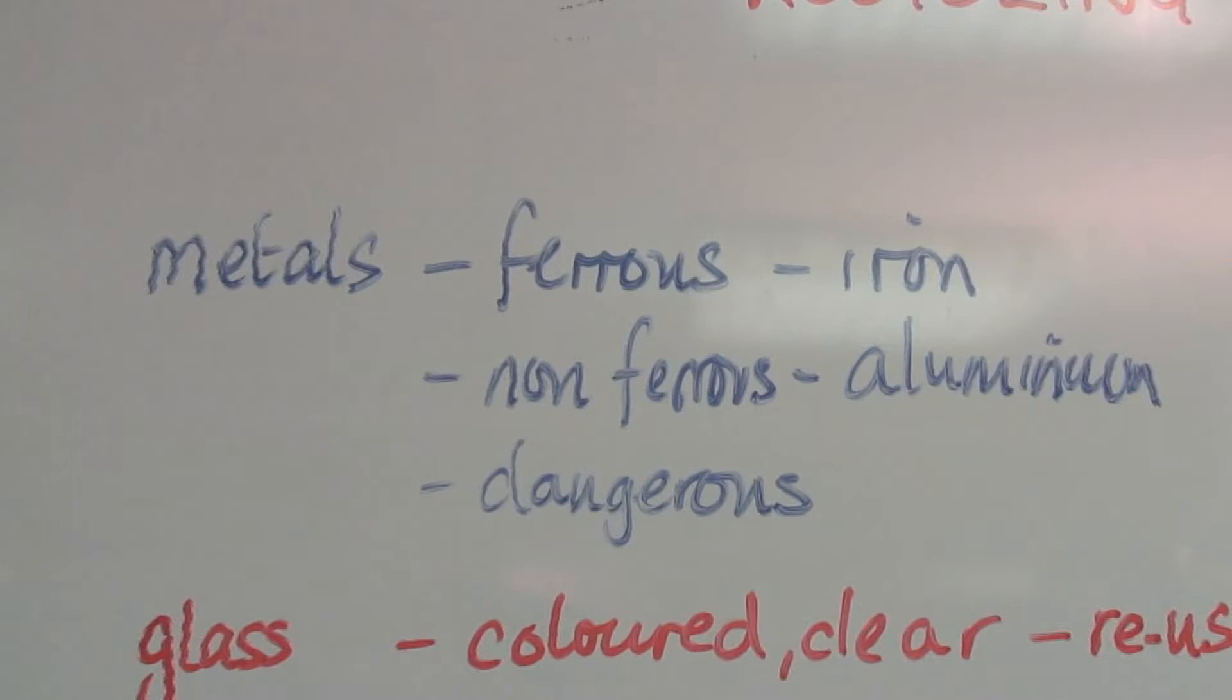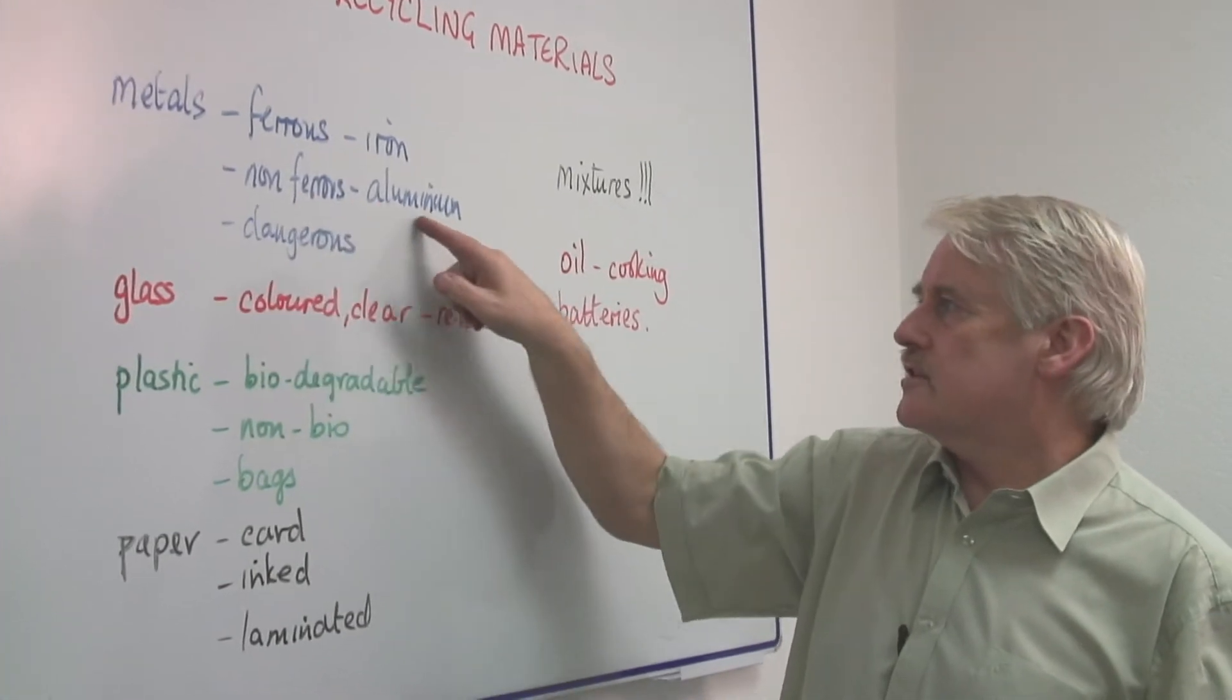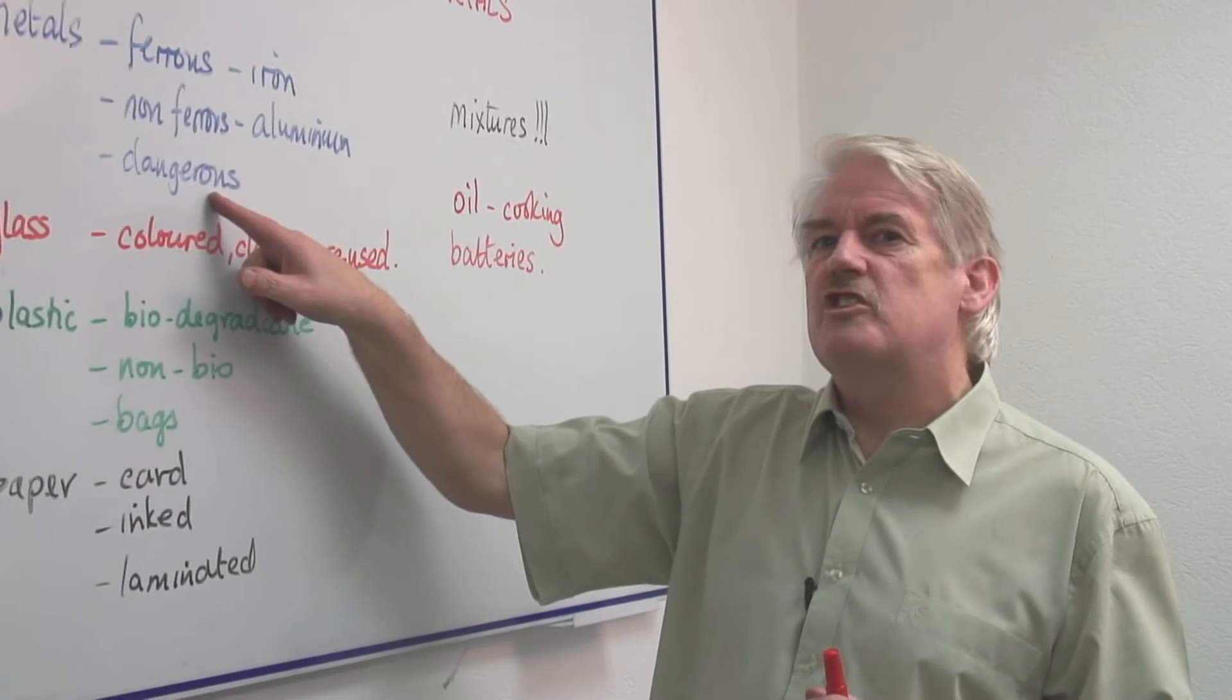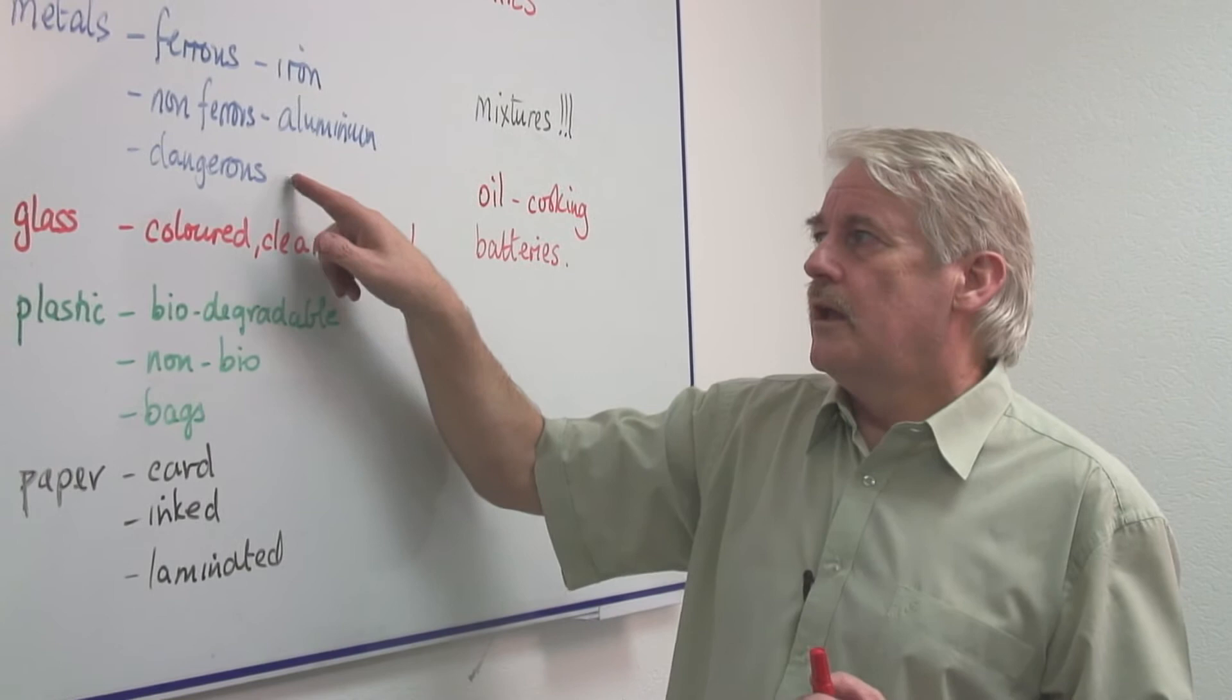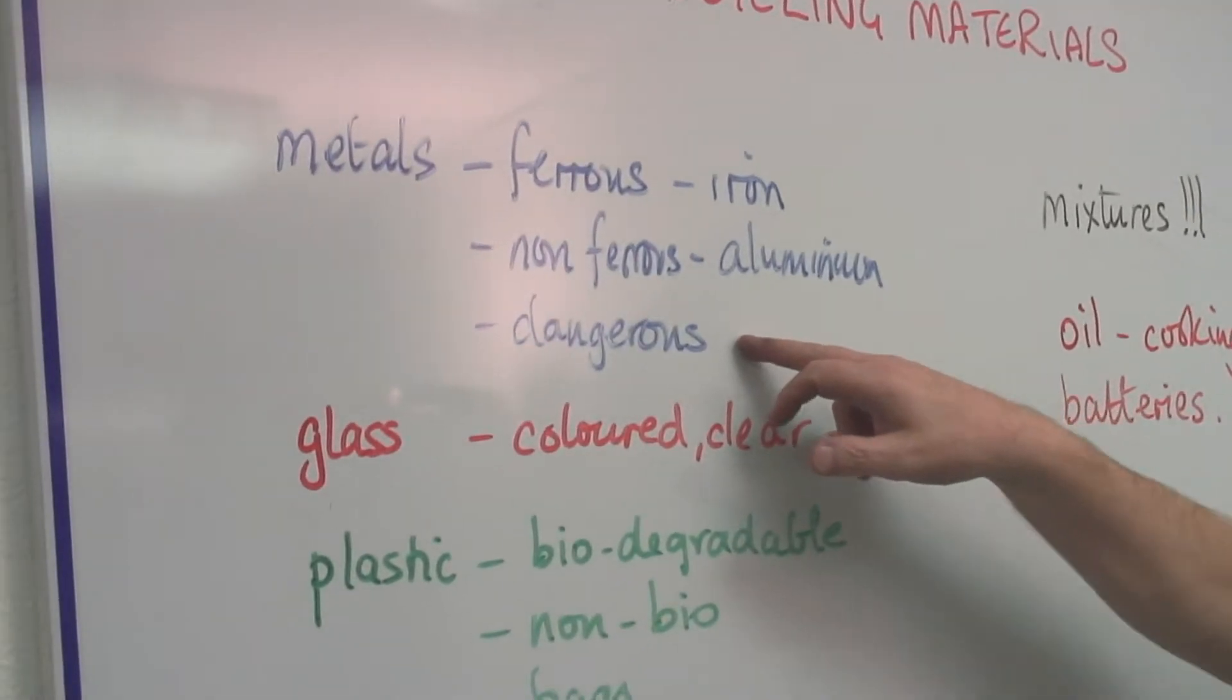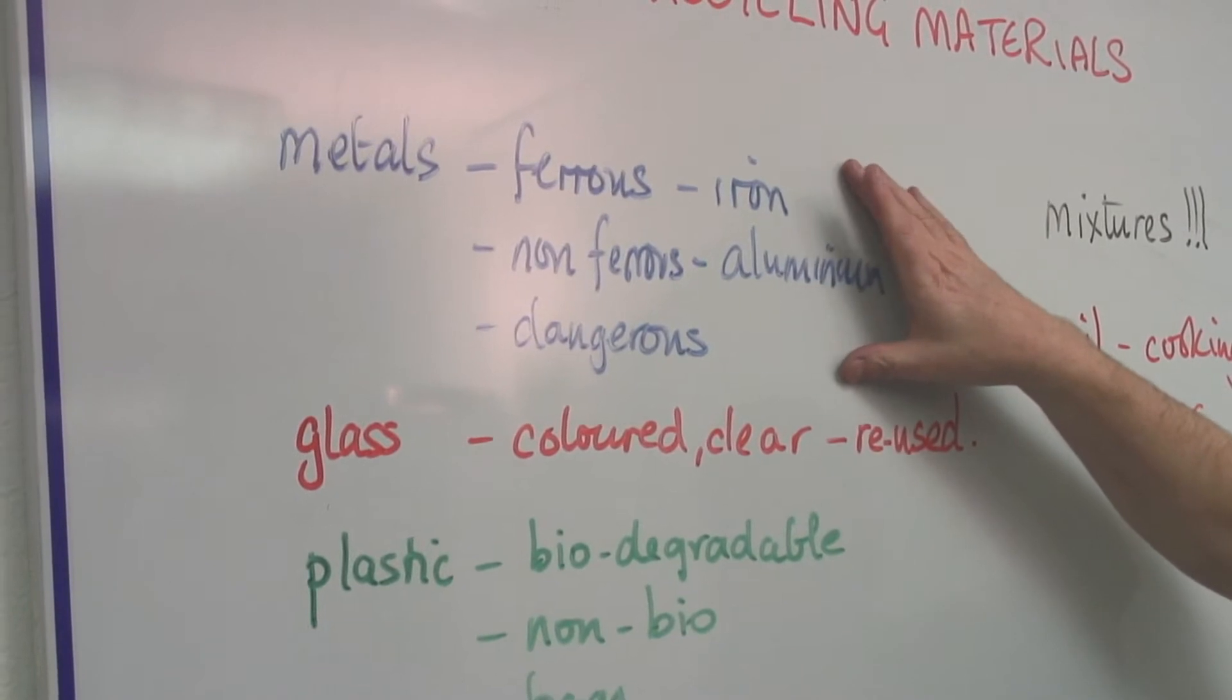If you look at metals, there are ferrous metals, that is metals which are magnetic, iron, steel. Non-ferrous, they are aluminiums and all of these and some valuable metals. And dangerous materials, poisonous metals, which are very often found in small quantities in electronic goods, they also can be recycled. Gold is often removed from integrated circuits, in electronic circuits. So those all can be recycled.